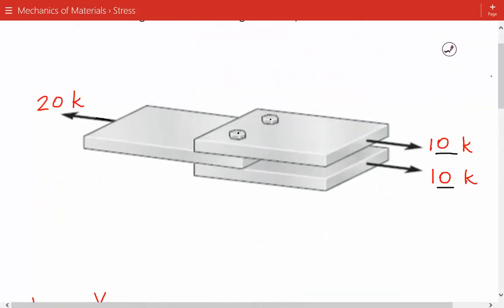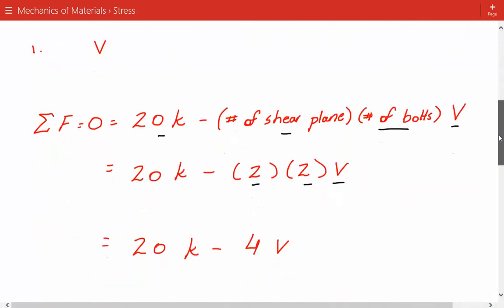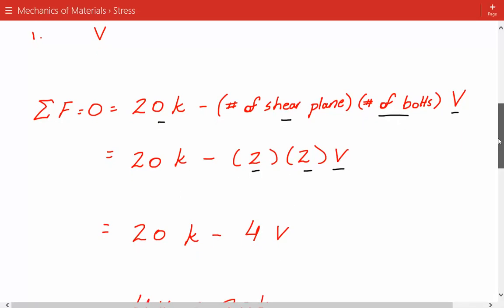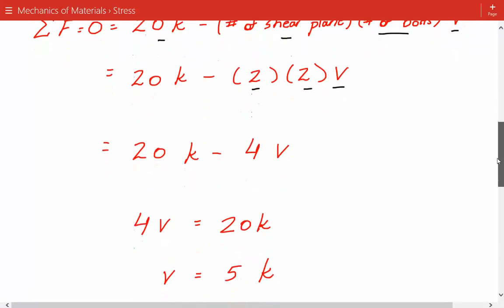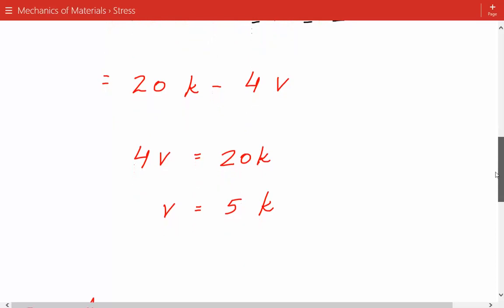We have two shear planes - here's our shear plane one, and here's the second shear plane. And then we have two bolts as well. So we have 20 kips minus 4V equals zero, so 4V equals 20 kips. And V, the shear force, is equal to 5 kips acting on each bolt.